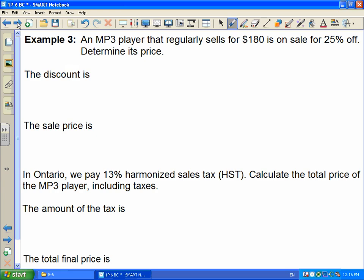The other big application you'll be asked to do is when you're given the price of something in a buying situation. It'll be discounted by some amount and you have to add tax onto it. You'll be asked to find the final sales price. Here's our example: an MP3 player that regularly sells for $180 is on sale for 25% off. We want to determine its price. Step one, determine what the discount is. The amount of the discount is 25% of $180.